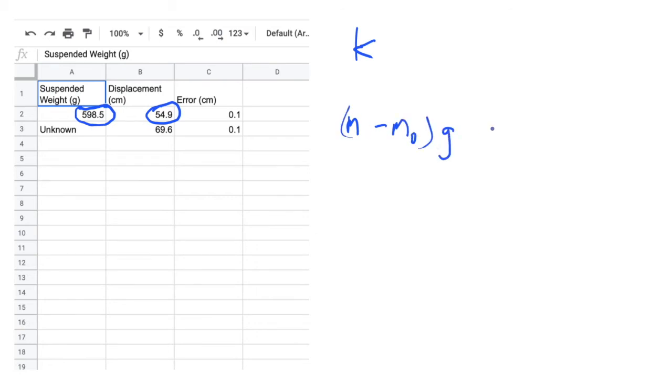That's the change in force, and that's got to be equal to the spring constant times the displacement that you measure for the unknown, minus the displacement for the known. So everything in here should be known except for the mysterious unknown mass. Go ahead and calculate that through, and make sure that you can compute an error on it.